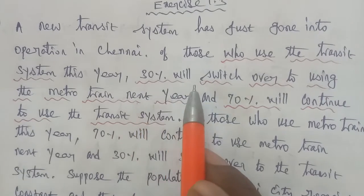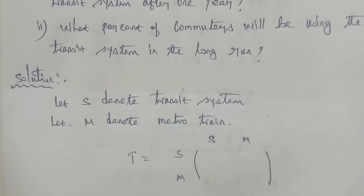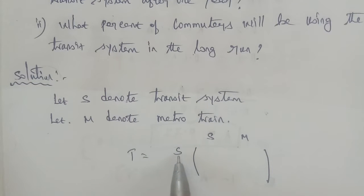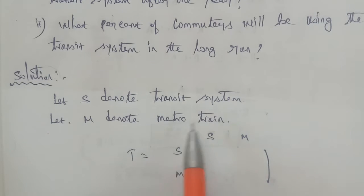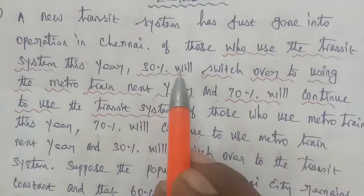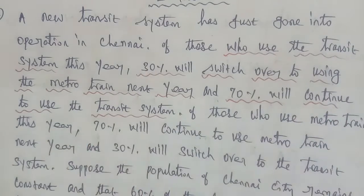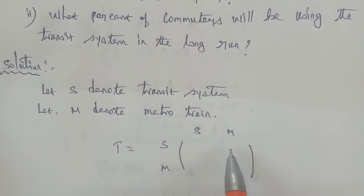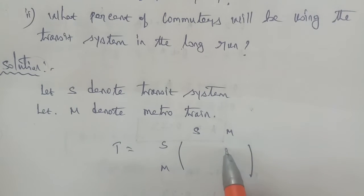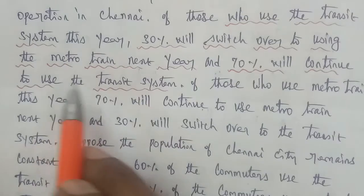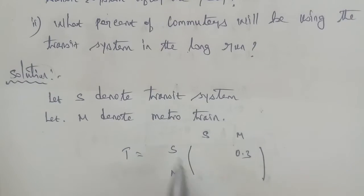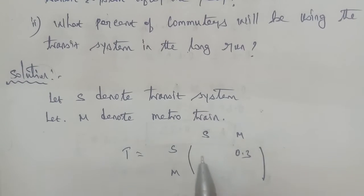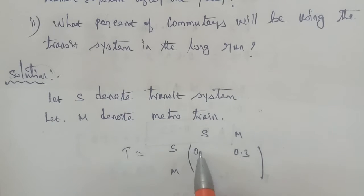Those using the transit system will switch over to the metro train — that percentage is 30%, which means 0.3. The remaining 70% will continue to use the transit system, which is 70/100 = 0.7.